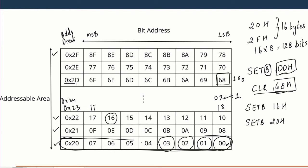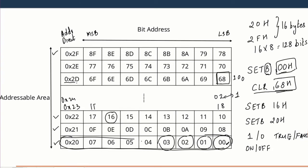This is how you work with the bit addressable area. The good part about it is that you can hold state. Microcontrollers control LEDs and switches, and the states are always 1 or 0 — on or off, true or false. When we want to save bit data, we can use these instructions to store data efficiently. These instructions are also comparatively faster.